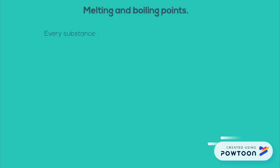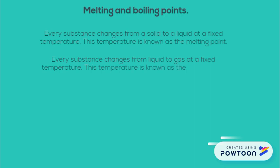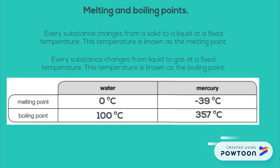Melting and boiling points. Every substance changes from a solid to a liquid at a fixed temperature — this temperature is known as the melting point. Every substance changes from a liquid to a gas at a fixed temperature — this temperature is known as the boiling point. Here is a chart with the melting and boiling points of water and mercury.